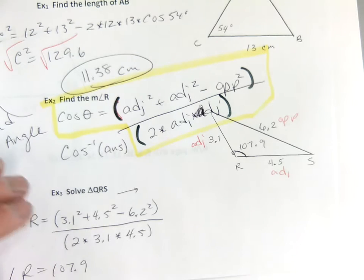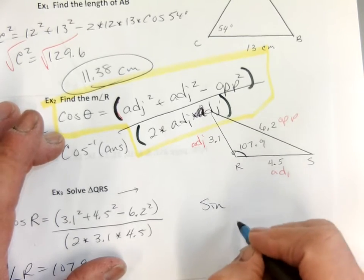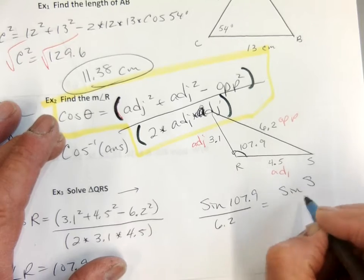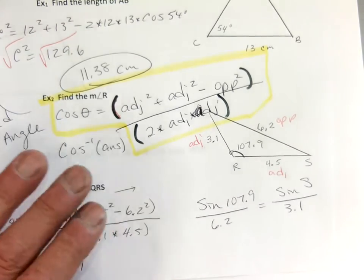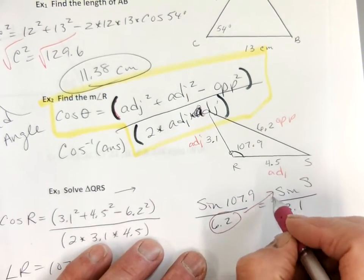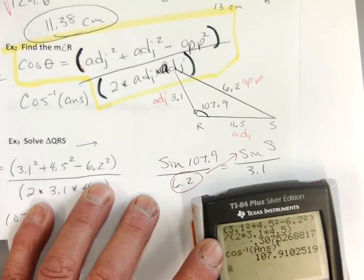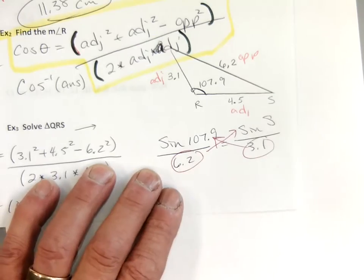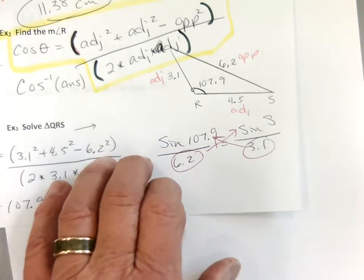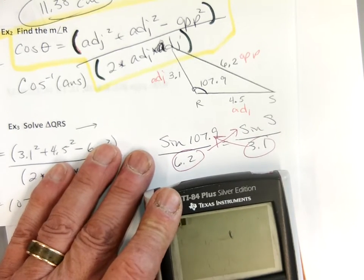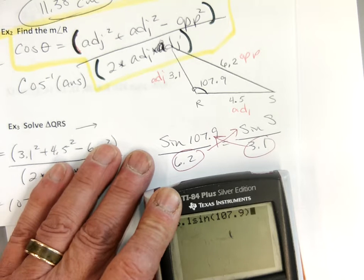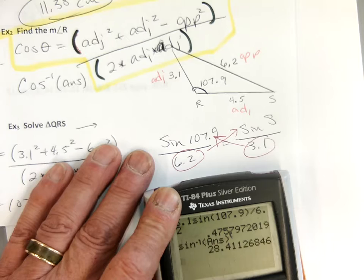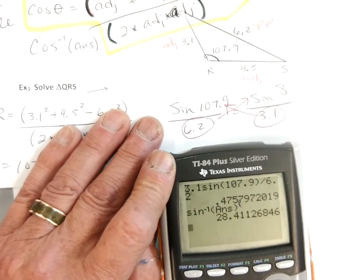So I'll set up: sine of 107.9 over 6.2 equals the sine of angle S over 3.1. Multiply it up — that was a great question, Ellie. So I'll do: 3.1 times sine of 107.9 divided by 6.2. I get a decimal, and then I do the sine inverse of that answer.